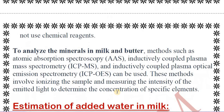Next we look at how to analyze minerals in milk. To analyze minerals in milk and butter, specific methods are used: atomic absorption spectroscopy (AAS), inductively coupled plasma mass spectrometry (ICP-MS), and inductively coupled plasma optical emission spectrometry (ICP-OES). All of these are spectrometric methods that give direct results about the mineral content in the sample and the concentration of specific elements present.